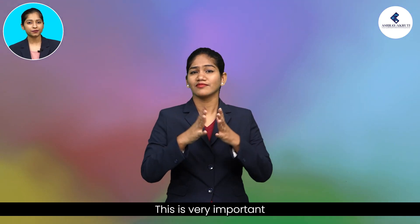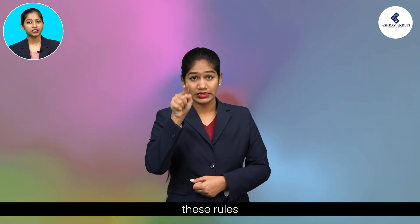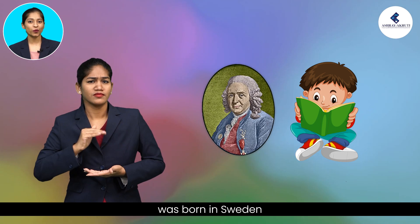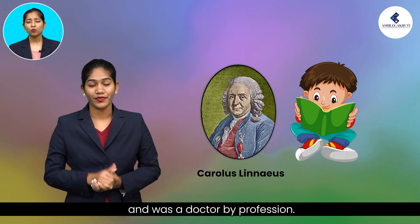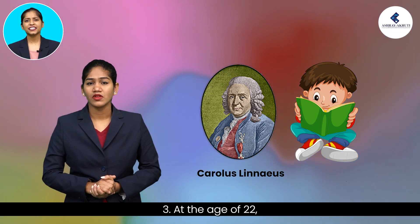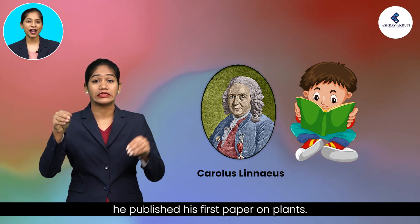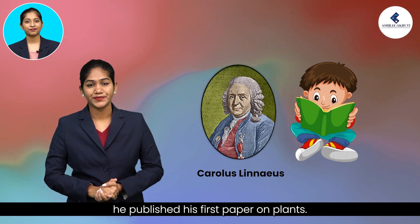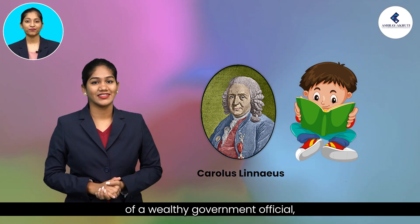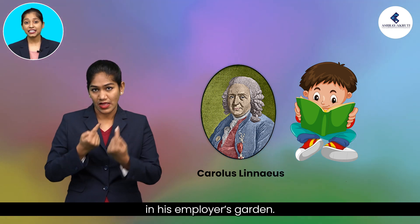This is very important and everyone needs to remember these rules, framed by Carolus Linnaeus. Carolus Linnaeus was born in Sweden and was a doctor by profession. He was interested in the study of plants. At the age of 22, he published his first paper on plants. While serving as a personal physician of a wealthy government official, he studied the diversity of plants in his employer's garden.